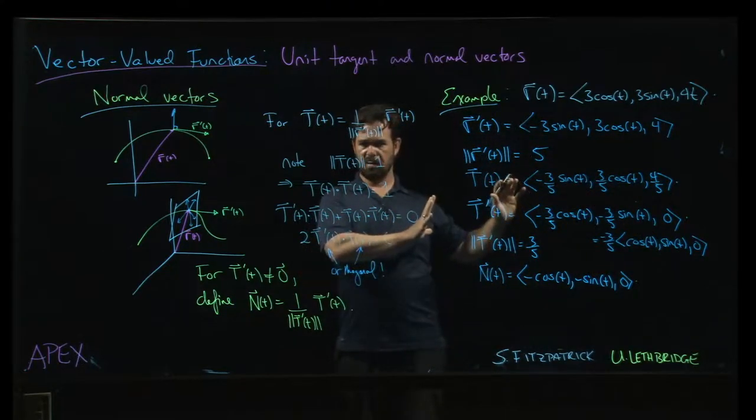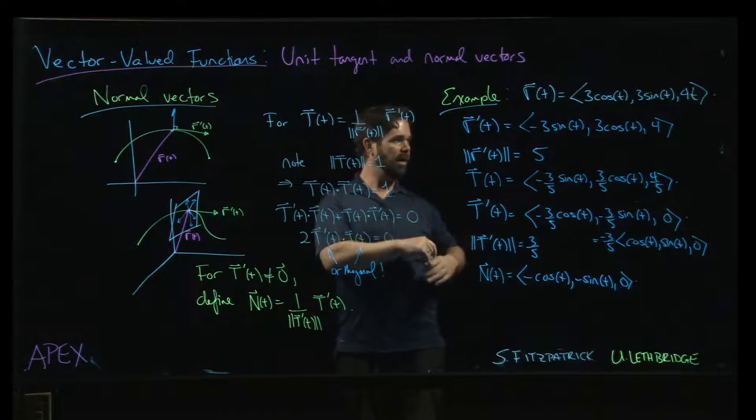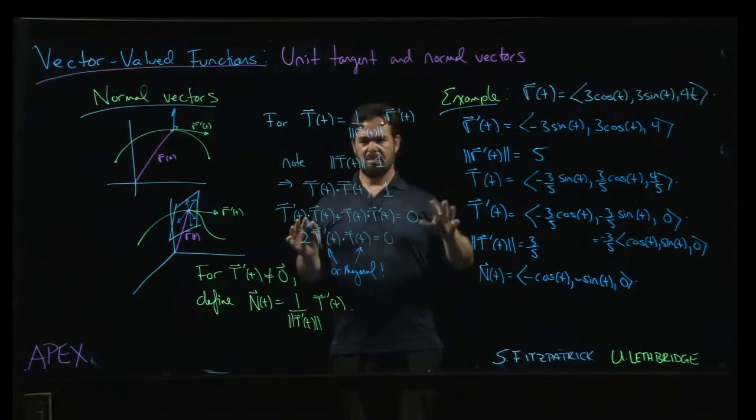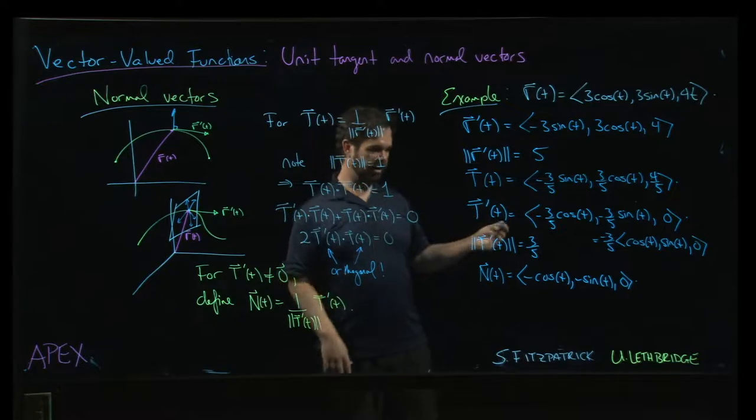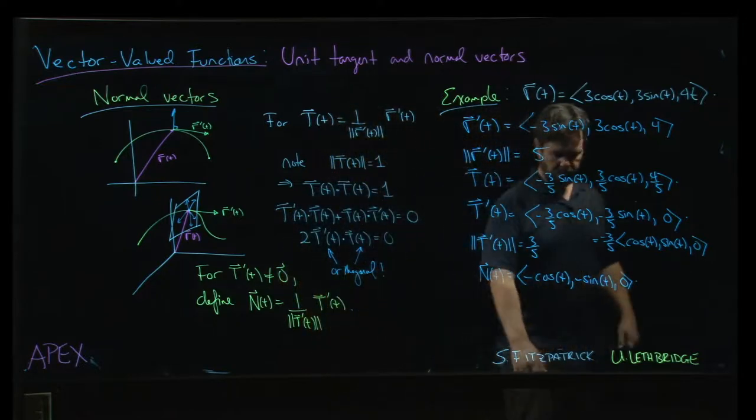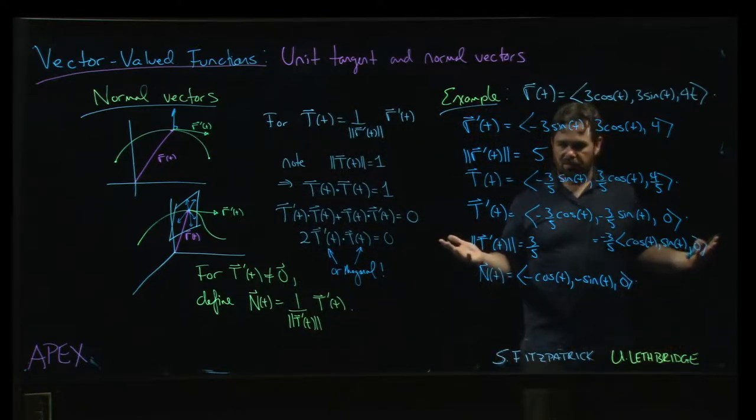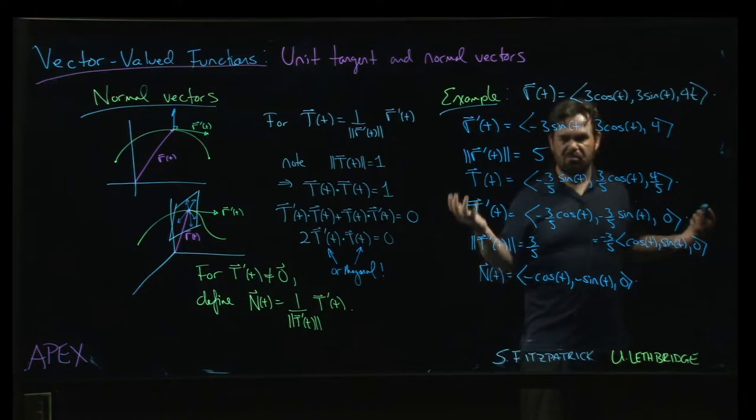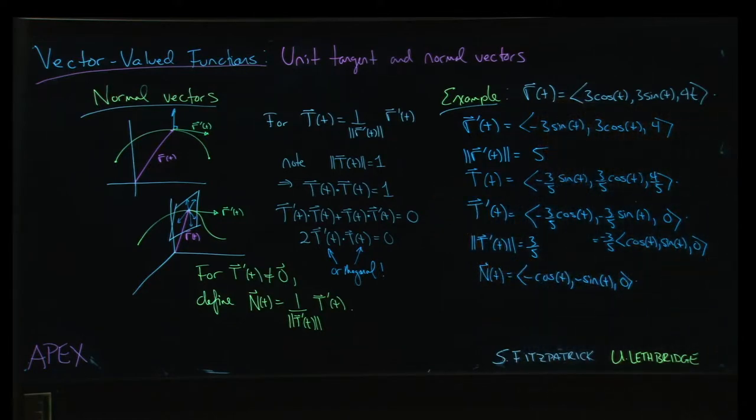In the textbook, this example asks you to plot these vectors when t equals pi over 2. I'll let the computer do the job there. You can look at the computer-generated image in the textbook. But if you go to the trouble of sketching them, you will find that these are orthogonal vectors. This one is normal to the curve. So it works as advertised.